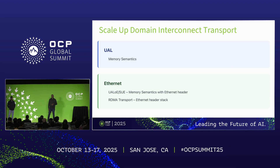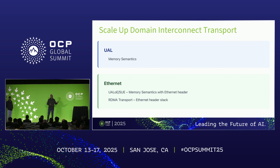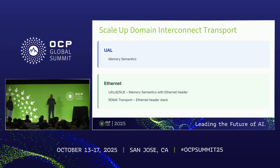First, let's look at the two approaches. We have UL, which is based on memory semantics that use load-store and atomic kind of memory transactions. And we have Ethernet, which has UL over Ethernet or scale-up Ethernet. These are basically memory transactions which are encapsulated over an optimized Ethernet header.